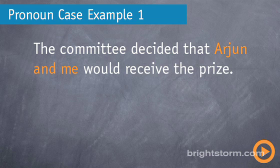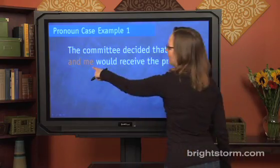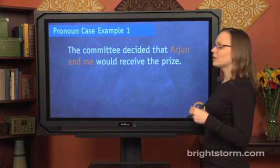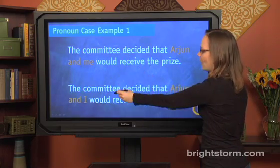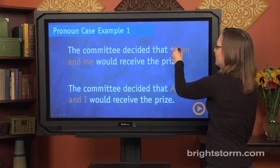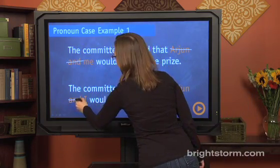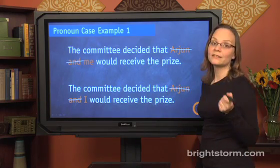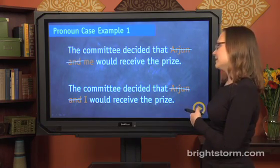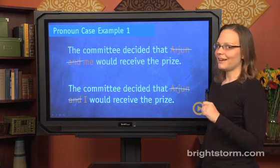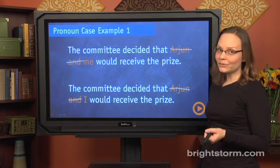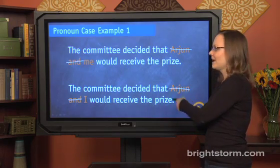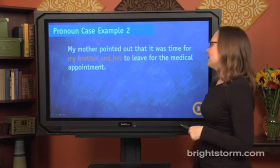Example: 'The committee decided that Arjun and me would receive the prize.' We recognize that pronoun case is being tested because we have a pronoun connected to another noun. We look at the pronoun in isolation, ignoring the 'and' and the other noun, and test both versions. 'The committee decided that me would receive the prize' — not looking so promising. 'The committee decided that I would receive the prize' — the second one sounds better, so 'I' is correct. If 'me' were an answer choice, you would eliminate it.